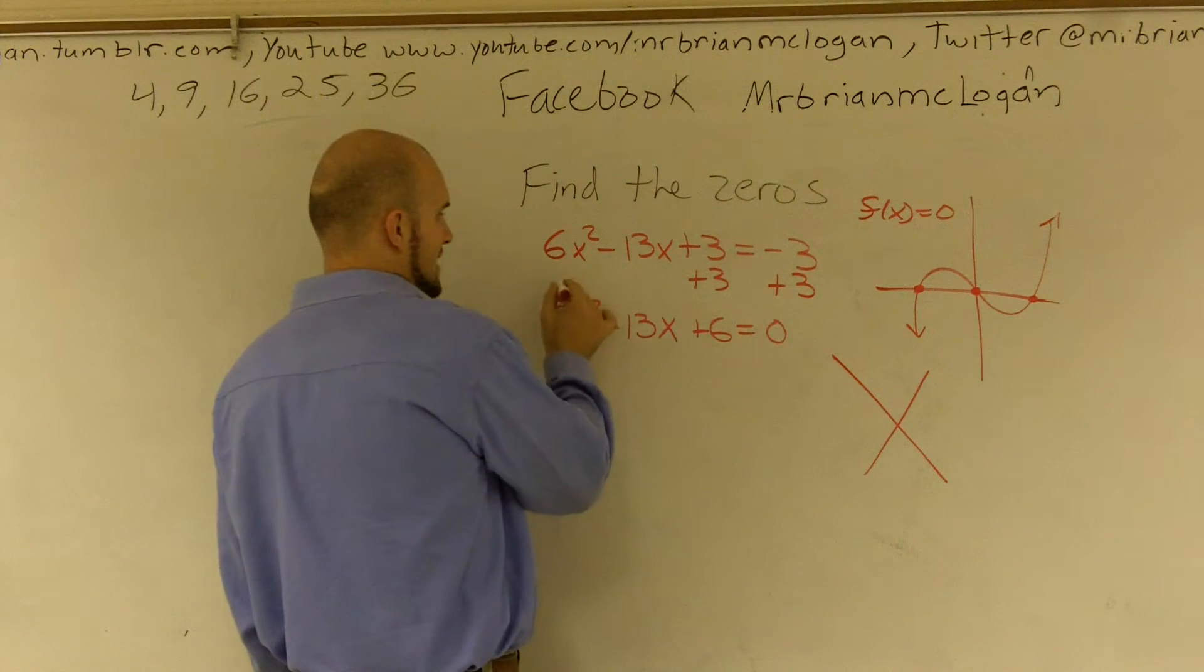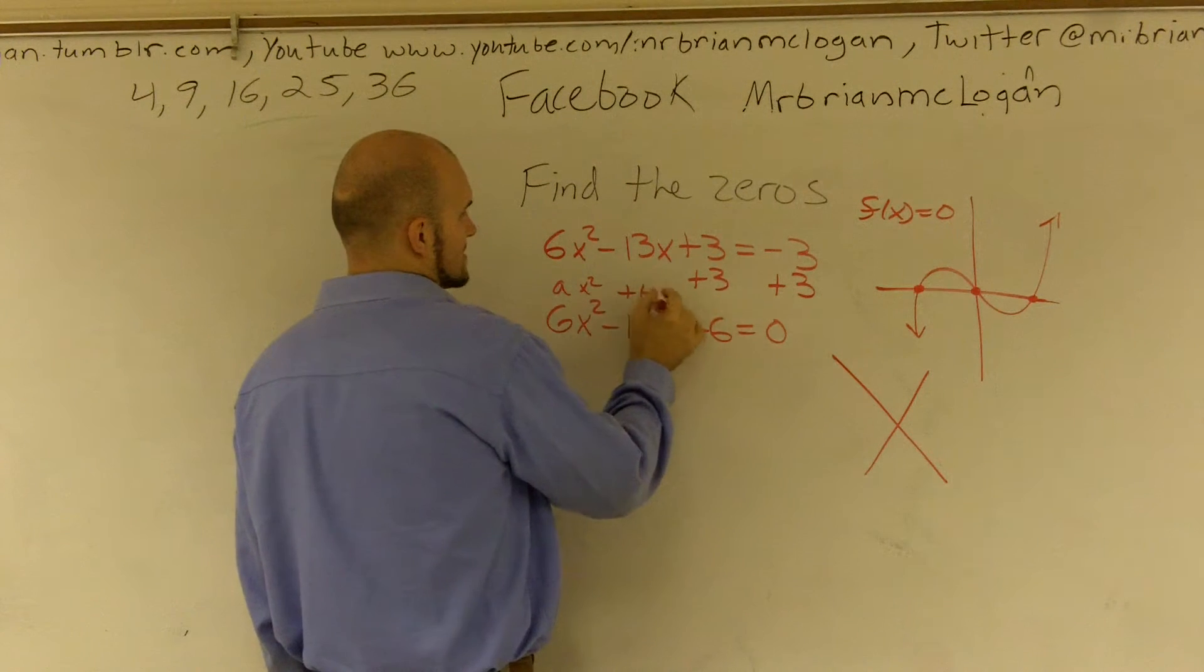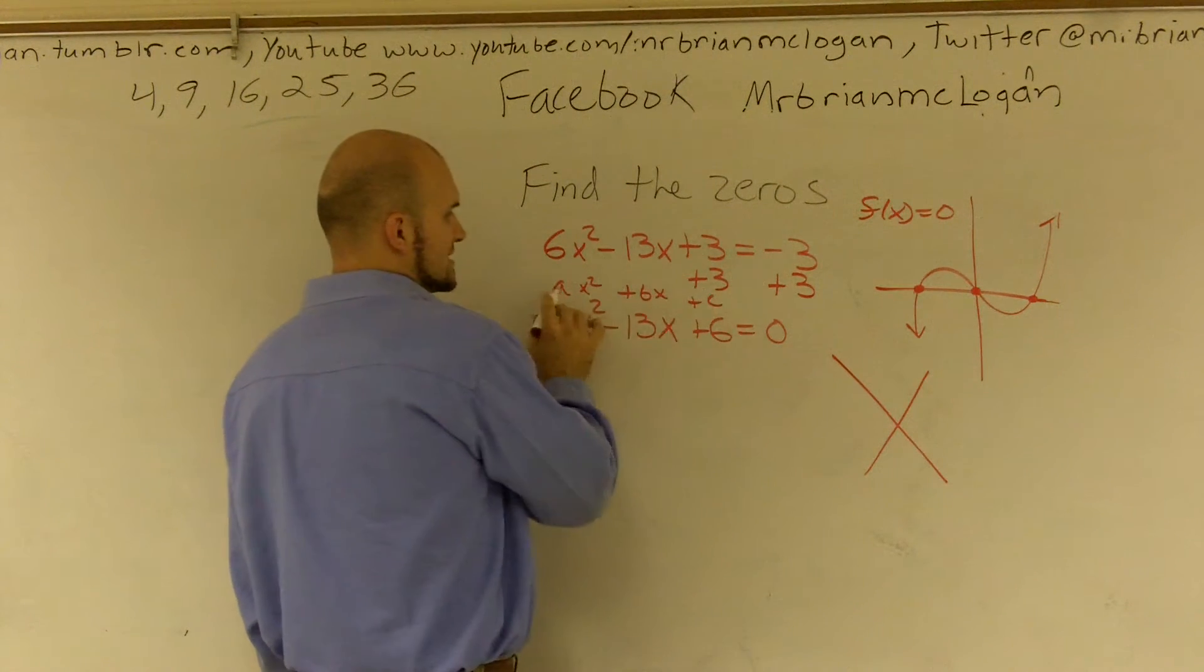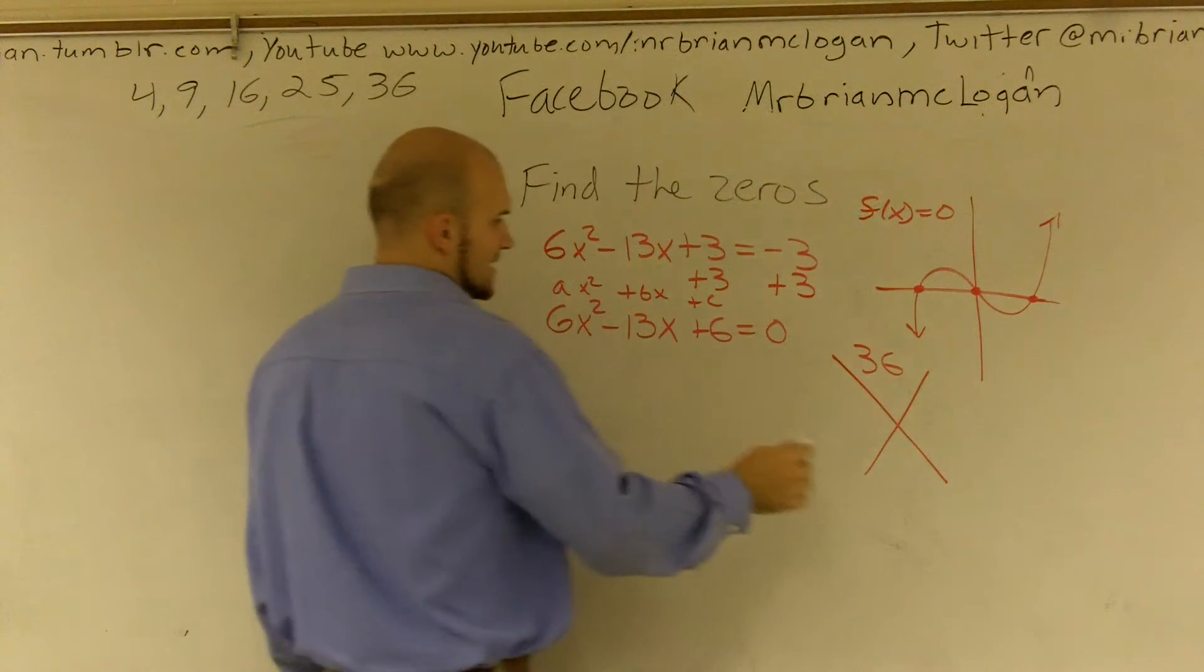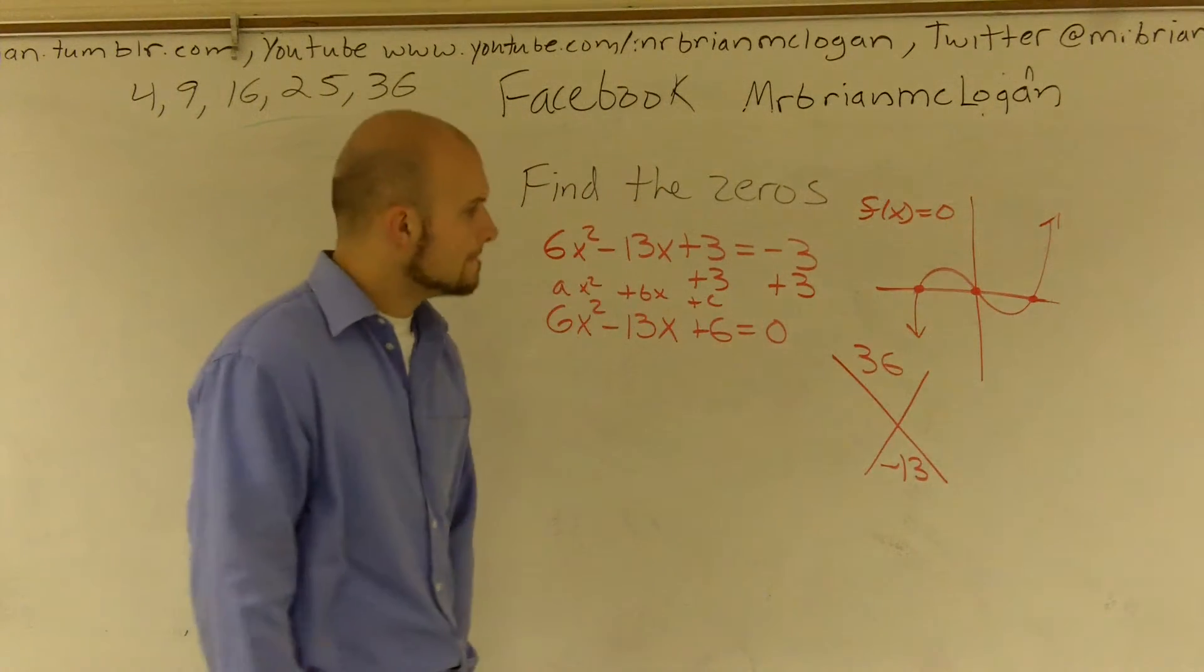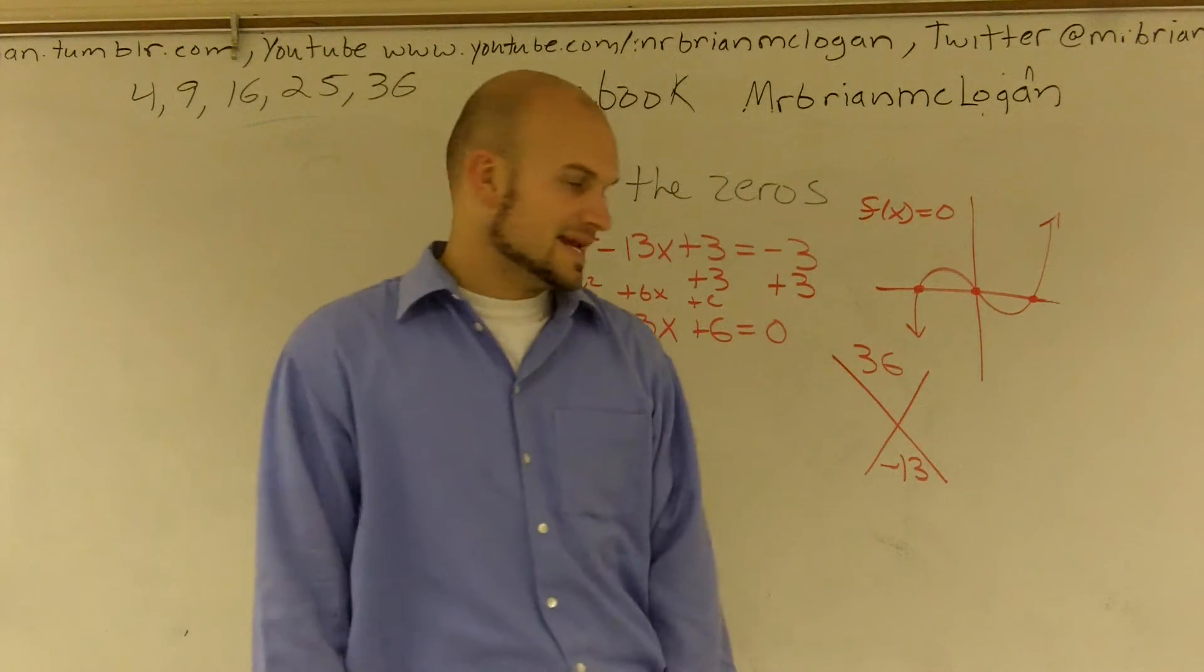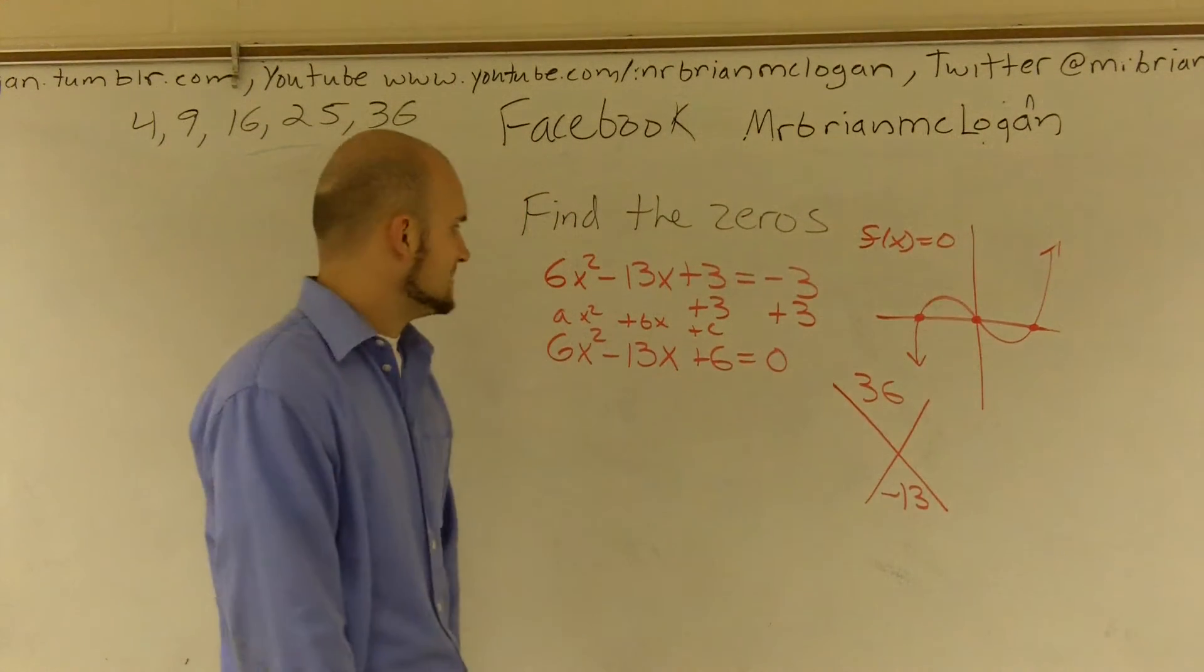So I'm going to take my a - remember this is ax squared plus bx plus c. So I'm going to take my a times c, which is 36, and then my negative 13. And I think of what two numbers multiply to give me 36, but then add to give me a negative 13.